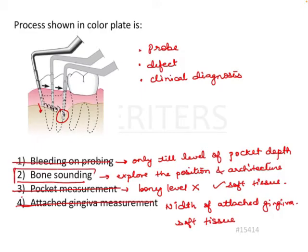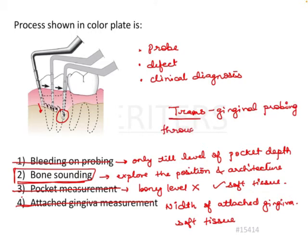Bone sounding is the right option, also known as transgingival probing. As we can see in the image, 'trans' means through, and 'gingival' means through the gingiva. So through the gingiva, under local anesthesia, the probe is inserted along the margin of the bone and walked along the structure so you can feel the osseous crater or any defect present near or around the tooth.